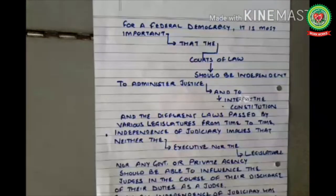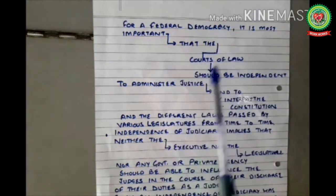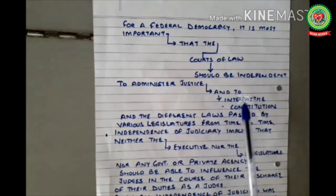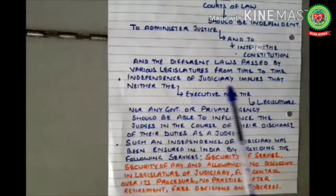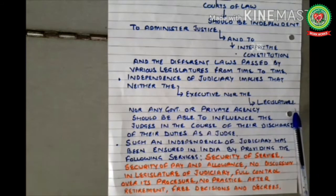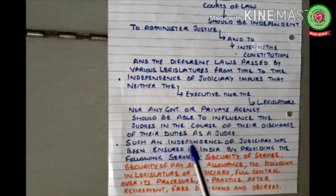For a federal democracy, it is most important that the court of law should be independent to administer justice and to interpret the constitution and the different laws passed by various legislatures from time to time. Independence of judiciary implies that neither the executive nor the legislature nor any government or private agency should be able to influence the judges in the course of their discharge of duties as a judge.